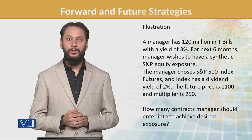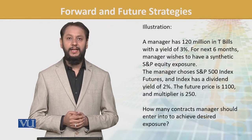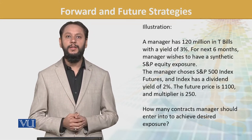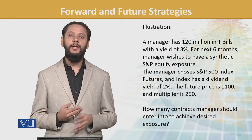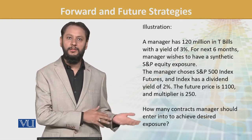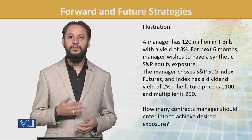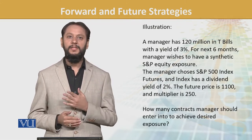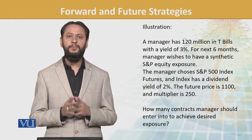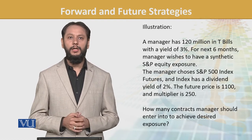The yield on those T-bills is 3%. For the next six months, the manager wishes to have a synthetic S&P equity exposure — he wants the return of the S&P index. One easy option would be to withdraw all money from T-bills and reinvest in the index, but that's practical and he only wants this for six months, so it's not a simple task. The alternate route is the synthetic path.